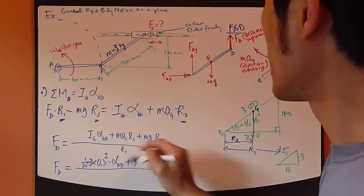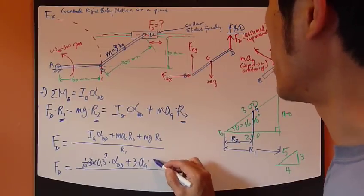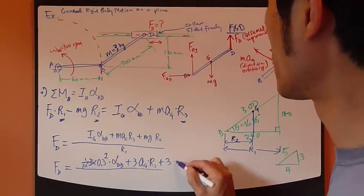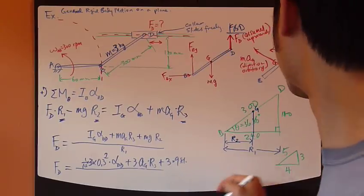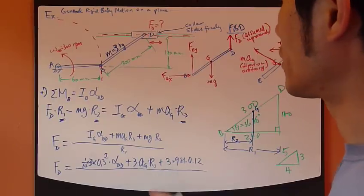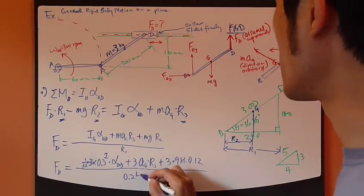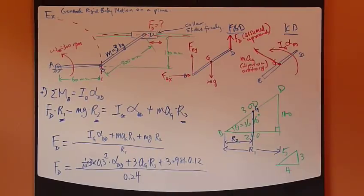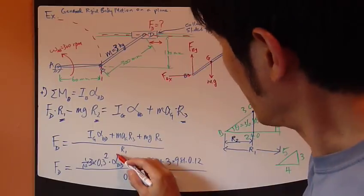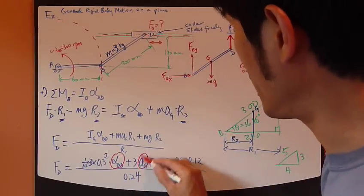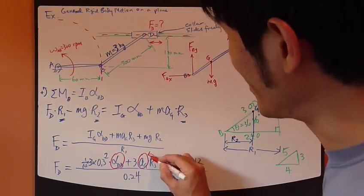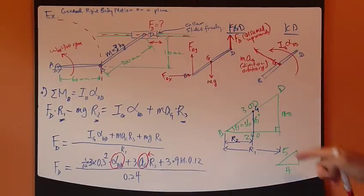Second term, mass is 3 kilograms. A_G, I don't know, times R3. I also don't know, but they're related. Third term, 3 kilograms times 9.81 times R2, which is 120 millimeters, which is 0.12 meters, divided by R1, which is 240 millimeters, which is 0.24 meters. Okay, so far, I have this equation for F_D. I don't know alpha BD. I don't know A_G. And R3, once again, I don't know, but it's tied to A_G. So, once A_G is found, I can figure out R3 right away.